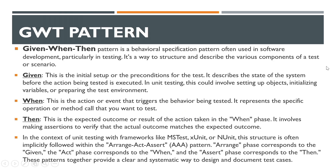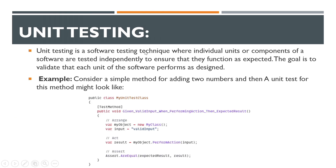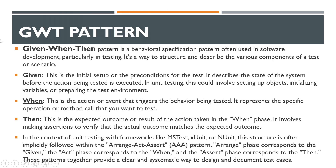Here is the first pattern used in our tests. We are using the Given-When-Then pattern. The test class name reflects 'Given a valid input'. This is a behavioral specification pattern often used in software development, particularly in testing — it's a way to structure and describe the various components of a test or scenario.